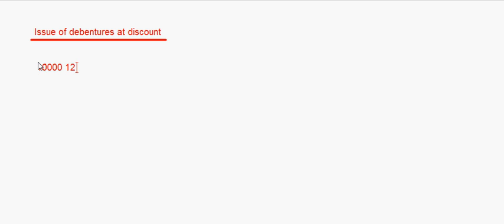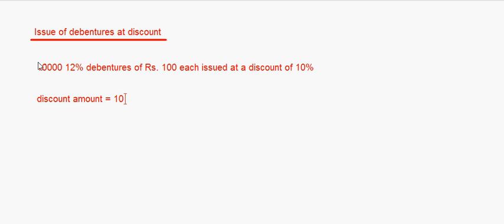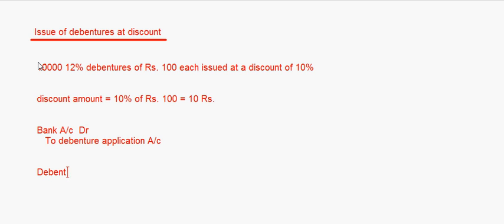Let's say 10,000 12% debentures of rupees 100 each issued at a discount of 10%. The discount amount is equal to 10% of rupees 100, which is equal to 10 rupees. The first entry will be bank account debit to debenture application account, and then debenture application account debit to 12% debenture account.